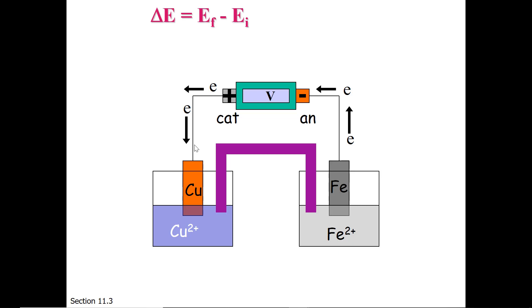Energy differences in chemistry are always the final minus the initial. So for an electrochemical cell, it will be the cathode minus the anode. The electrons finish at the cathode, and they begin at the anode. Hence, finish minus start.